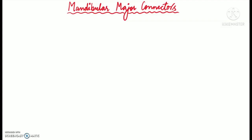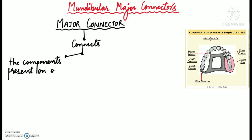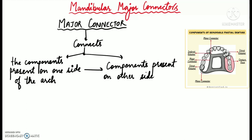Although I've already explained in detail about major connectors, their functions and requirements in a previous video, I'll begin with a brief overview because it will help you understand today's topic better. A major connector is that part of a removable partial denture that connects the components present on one side of the arch to the components present on the other side of the arch, as seen in the picture.